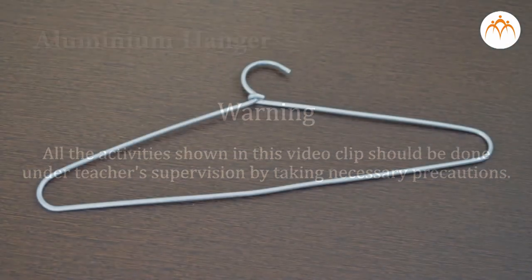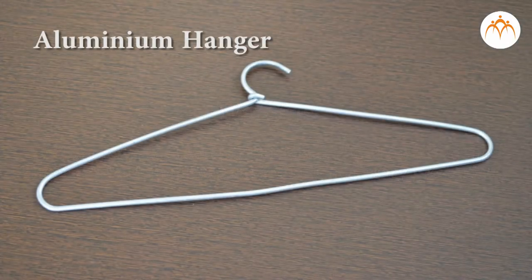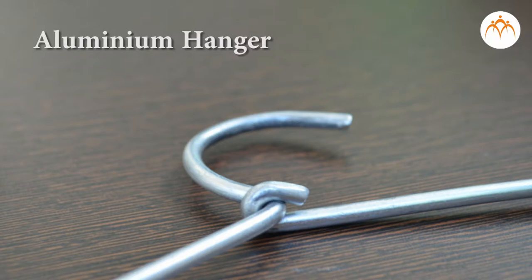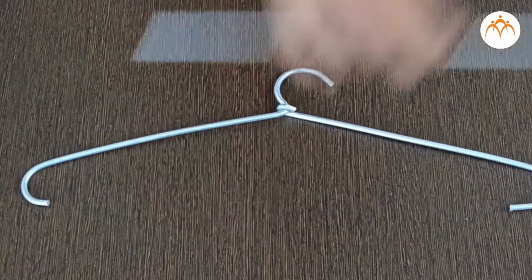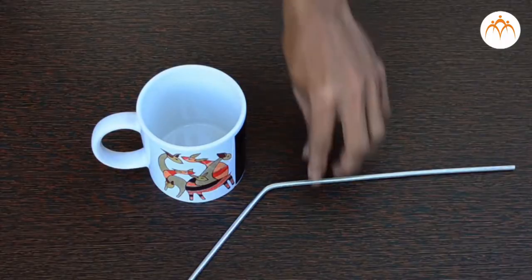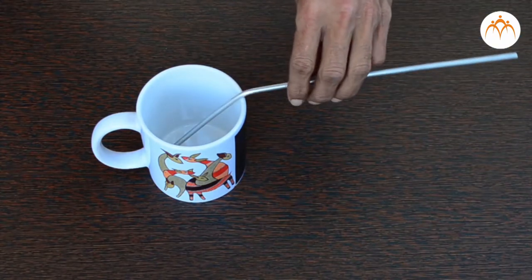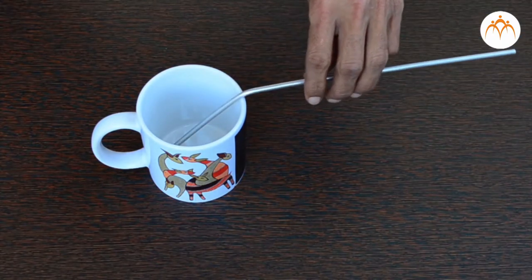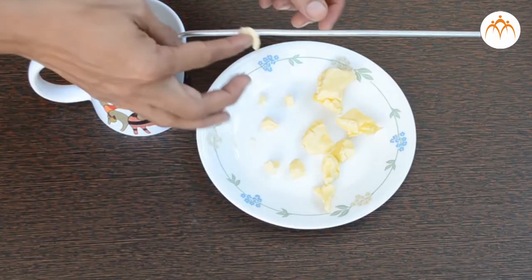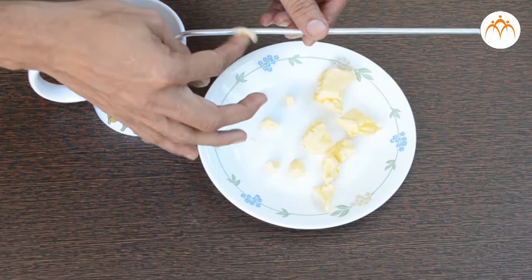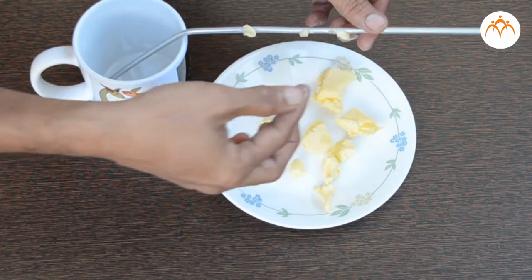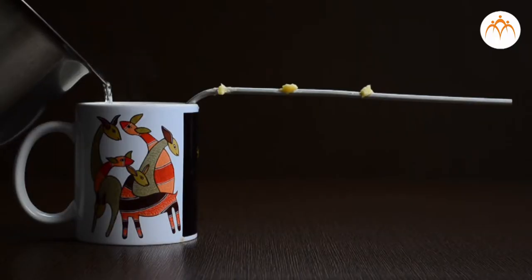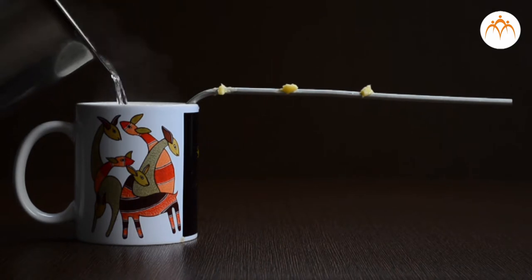Conduction. Let me take this hanger — it is made up of aluminium. I will cut a small rod from it, bend it, and place it in a large cup. Let me stick some butter at these locations. Now, let us pour boiling water in the cup.